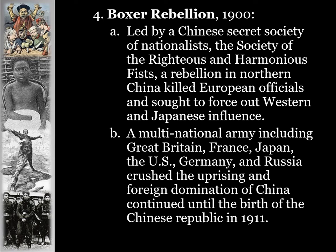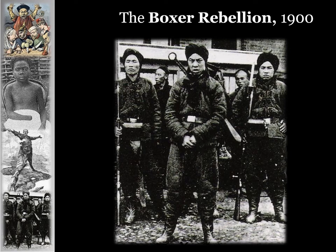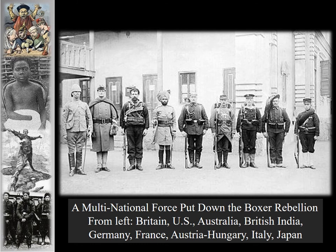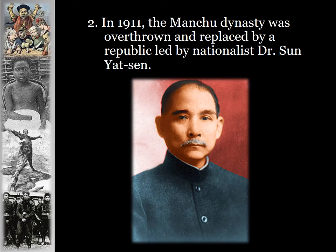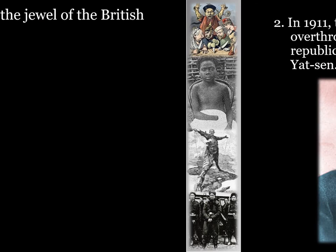Foreign domination of China continued until the birth of the Chinese Republic in 1911. Pictures of the Boxers, the Chinese nationalist rebels, and the multinational force show troops from Britain, the U.S., Australia, British India, Germany, France, Austria-Hungary, Italy, and Japan. In 1911, the Manchu dynasty was finally overthrown and replaced by a republic in China, led by nationalist Dr. Sun Yat-sen.